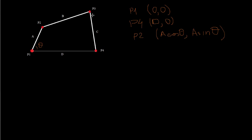The only problem here is that we don't know this angle here. So we need to know that angle so that we can find the positions that P3 assumes over time. First let's draw a line between points 2 and 4, and let's call the distance between these two points E. And let's call this angle here alpha and this one beta.